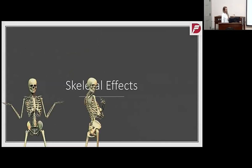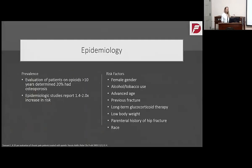Moving on to skeletal effects — this is my favorite slide. The prevalence is also unclear, but evaluation of patients on opiates more than 10 years determined that 20% had osteoporosis in a study of 3,000 patients. A few epidemiologic studies report a 1.4 to 2 times increased risk of developing osteoporosis for patients on chronic opiate therapy. Risk factors are listed, and the more risk factors a patient has, the more compounded the risk. Modifiable risk factors include alcohol use, tobacco use, smoking, low body weight, inactivity, and long-term glucocorticoid therapy.